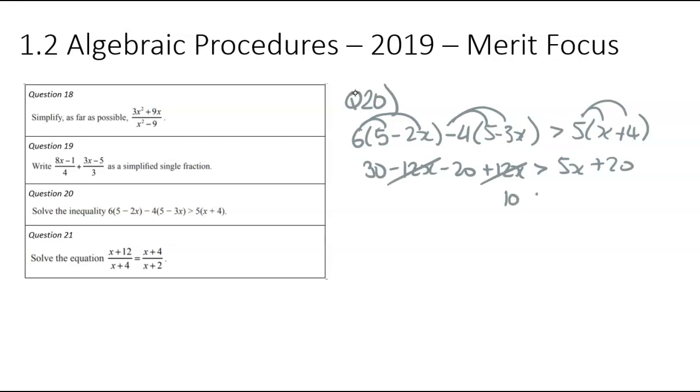And we can see the minus 12x and the plus 12x, they cancel each other out. So 10 is greater than 5x plus 20. And this is just a really standard kind of year 9, year 10 equation. We're going to go minus 20, minus 20, so negative 10 greater than 5x. Now we're going to go divide by 5, divide by 5, negative 2, and then the x. So what this means is x must be less than that negative 2 value.